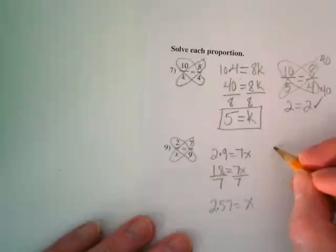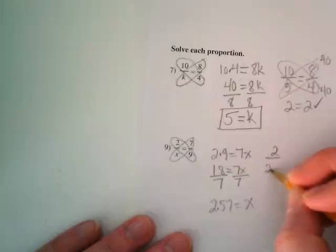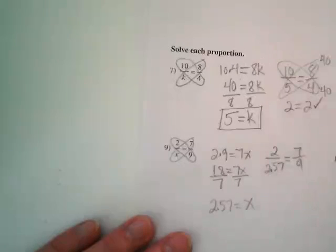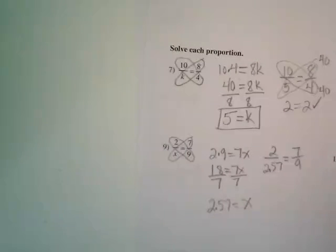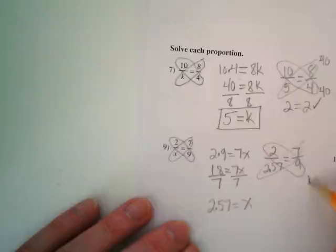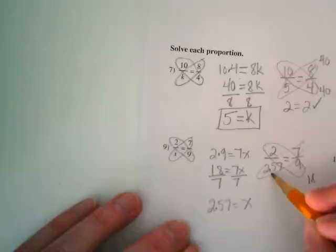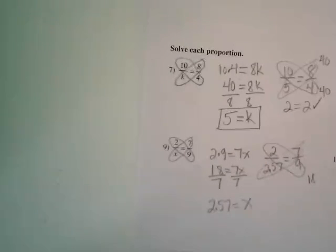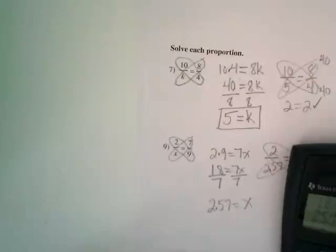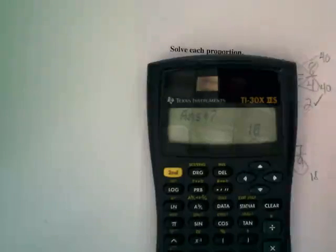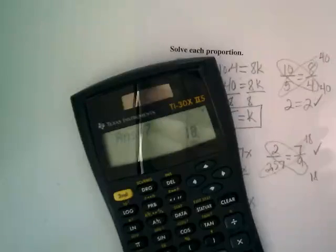So let's go back and try checking it. 2 over 2.57. Is that equal to 7 over 9? Well, cross multiply. 2 times 9 is 18. 7 times 2.57 is going to come close to 18. Oops, didn't mean to throw my calculator there. I've got 2.57 times 7 and I got 18 exactly, even though we rounded the decimal. So that way we know it checks.